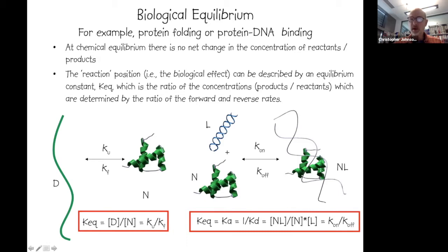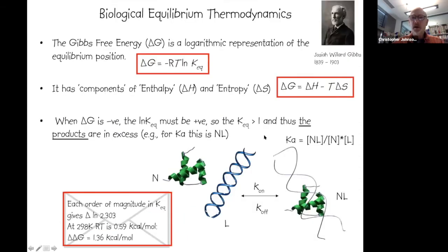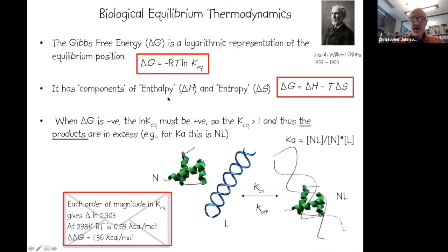For a bimolecular interaction, concentration becomes part of the equilibrium, but in principle it's the same. People often find thermodynamics unpleasant but it's not really that complicated. The Gibbs free energy is simply a logarithmic representation of the equilibrium position: ΔG = −RT ln(K). This free energy has components of enthalpy (ΔH) and entropy (ΔS), which I'll describe in more detail.